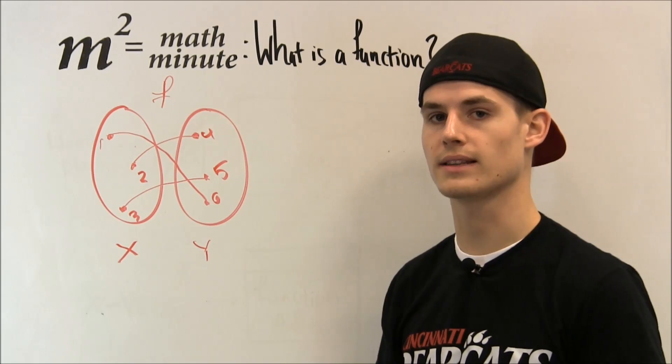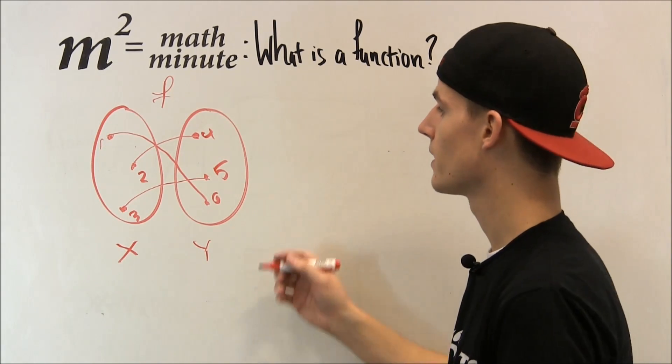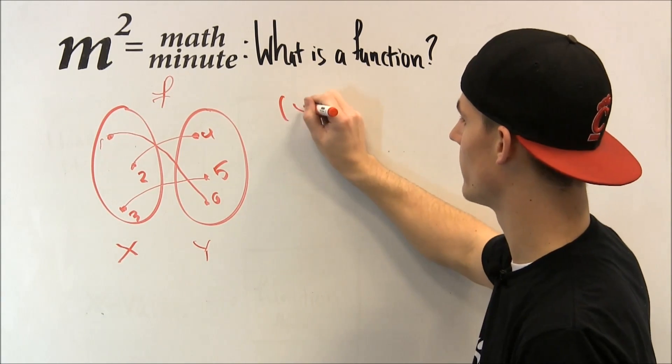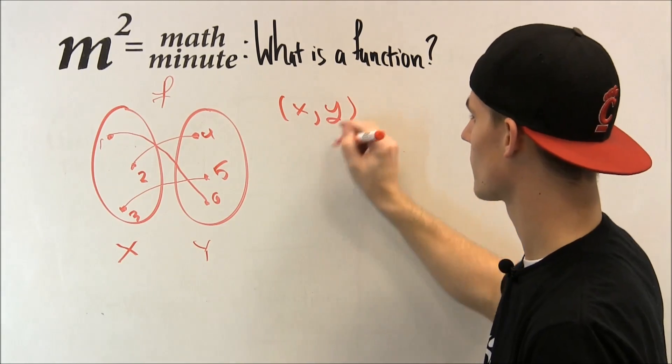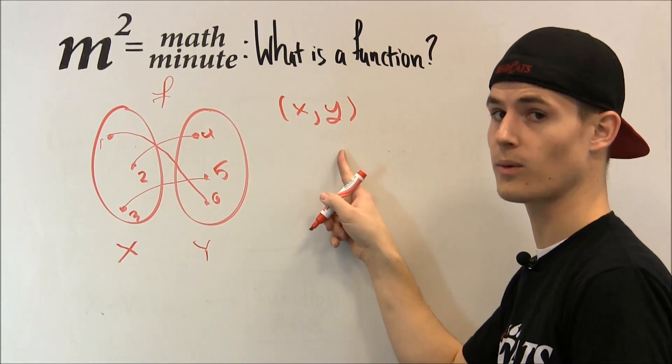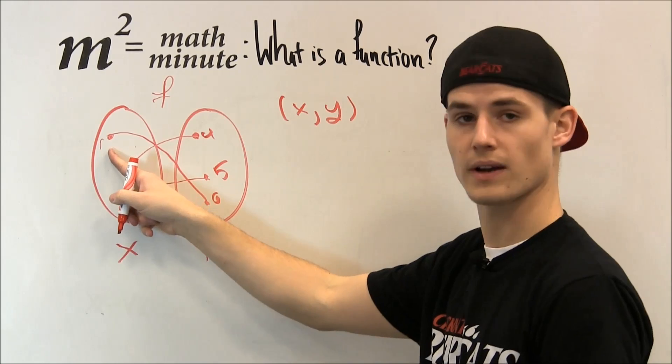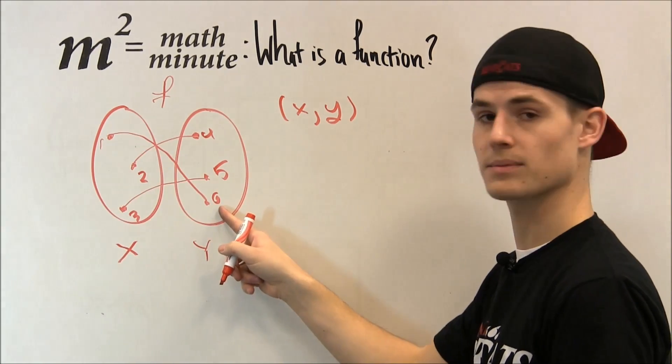There's another way we can write these, and those are known as ordered pairs. What we're going to do is we're going to group them in a fashion like this with an x value and its corresponding y value. Over here the x value is 1, and it was mapped to 6.